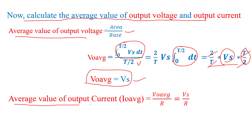For the average value of output current, we use I = V/R. So I_average = V_average / R = VS / R. This is the average value of output current.